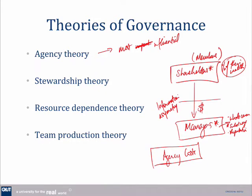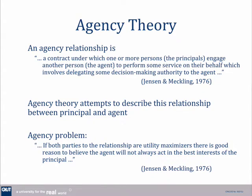A whole lot of governance is focused on how do we reduce this kind of phenomenon — managers pursuing their interests, not the shareholders'. And one of the key ways we can do it is we introduce this thing called a board. The board is there to monitor managers and align the interests. That really is the core of agency theory.